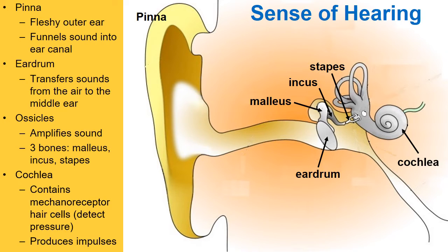Mechanoreceptors detect pressure, and hair cells detect pressure. The pressure that they detect is going to be interpreted as sound by our brain. It is these hair cells that are ultimately going to produce the impulses — the action potentials — that will lead into our brain for us to hear sound.